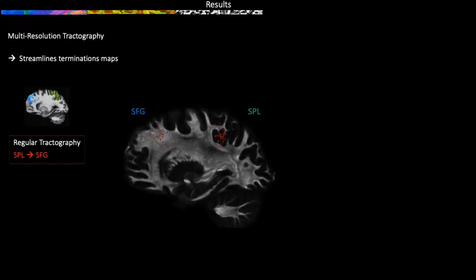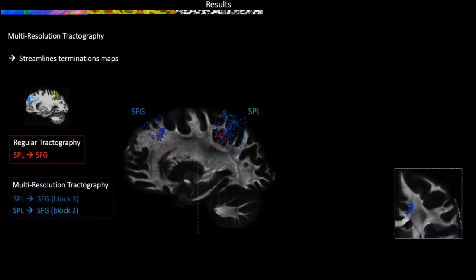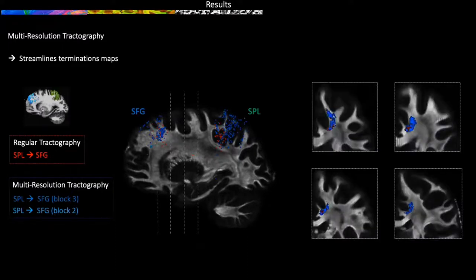These images show the streamline termination maps for regular tractography versus multi-resolution approach. And if we look at the distribution of the streamlines, we can see that we not only obtain more streamlines, but that they are differently distributed.